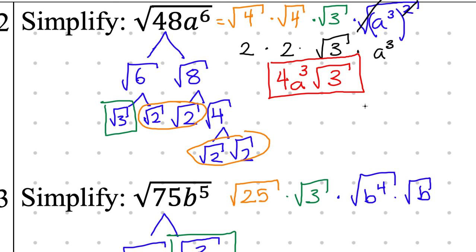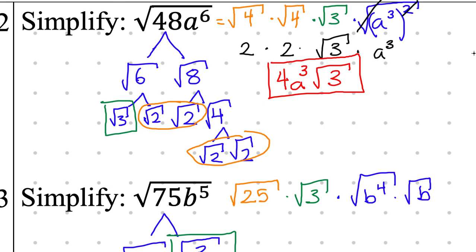Esha notes: you could write 5 times the square root of 3, skipping a step since you already know the square root of 25 is 5. Now what do I do with b to the power of 5? Charles: it would be b to the 1 times the square root of b to the 4. Esha asks: since b to the 5th has an odd power, we separate it and make the remaining part a separate square root? Yes — whenever you have an odd power, you're always going to be left with some random square root of that variable. Whenever you have an even power, that doesn't happen.